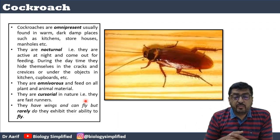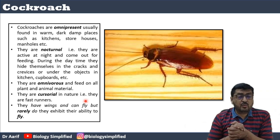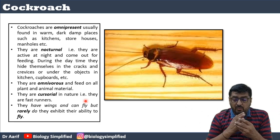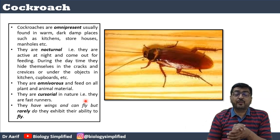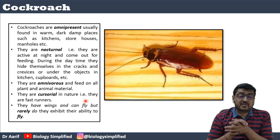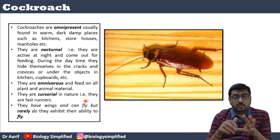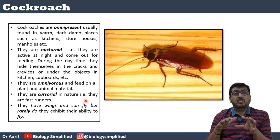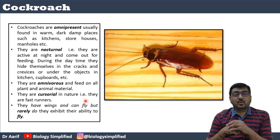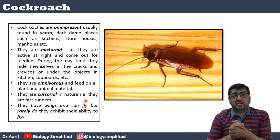Cockroaches are omnipresent — they are found in all areas and places. They are usually found in warm, dark, damp places such as kitchens, storehouses, and manholes. Kitchens are always a favorite for cockroaches whether it is your home kitchen or a five-star hotel kitchen. Cockroaches are nocturnal — they hide themselves in cracks during the day and come out at night for food.